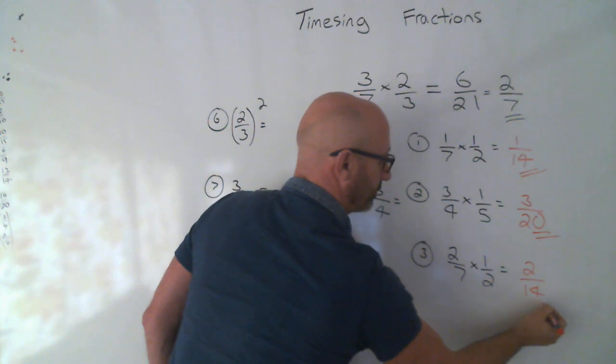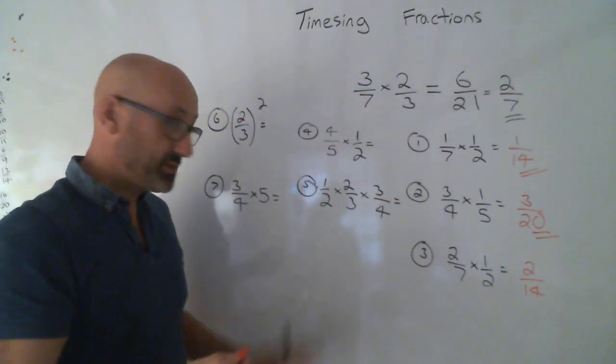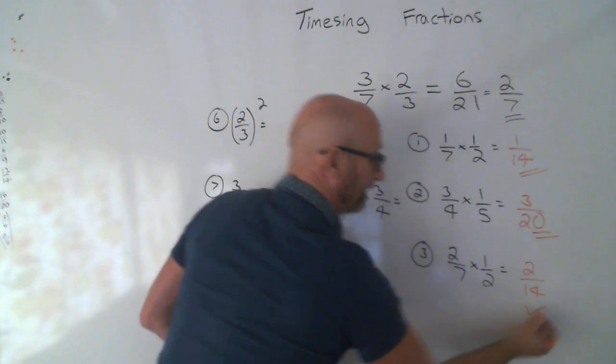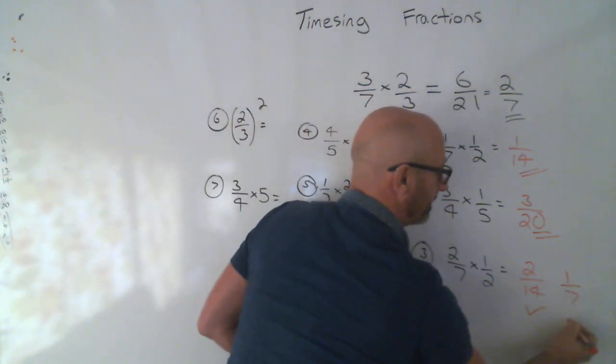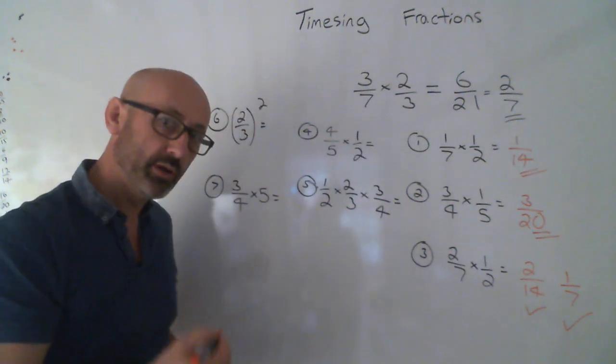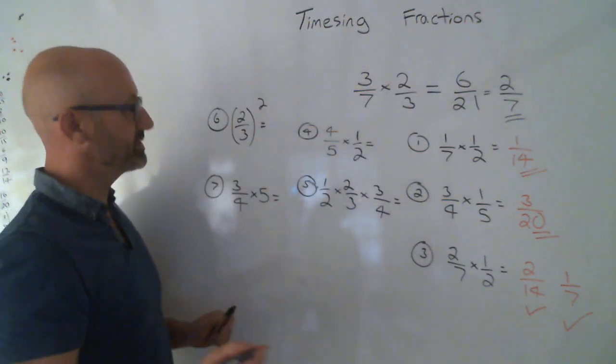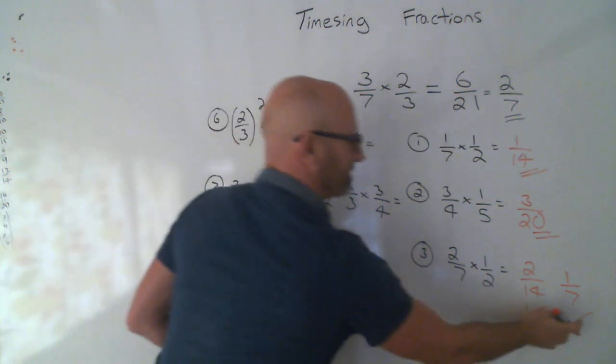2 over 14. Did you spot that that was simplified? Give yourself a little tick if you did that. But give yourself an even bigger tick if you simplified it. They're both still right. But that one's more right.